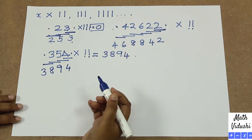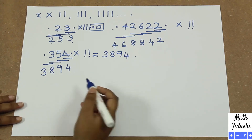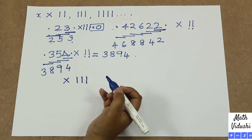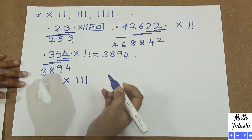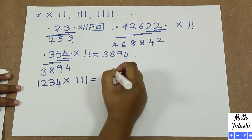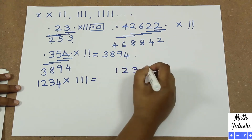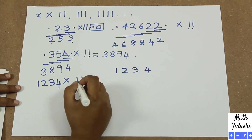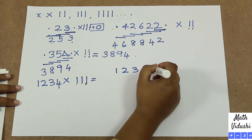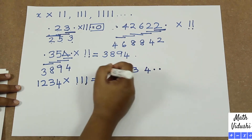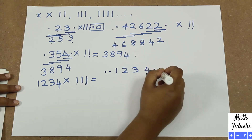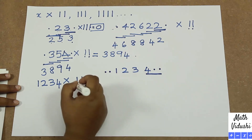Now what do you do when the number of 1s is greater than 2? That is, you have to multiply a number with 111. Say let's take the number 1234. There are three 1s here, so you put 2 dots at the end of the number and 2 dots at the beginning of the number, and take 3 numbers at a time — because there are three 1s.